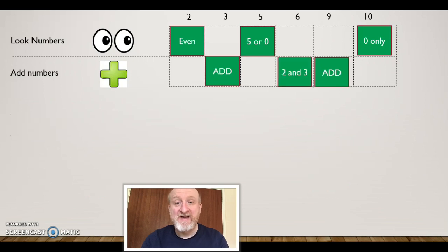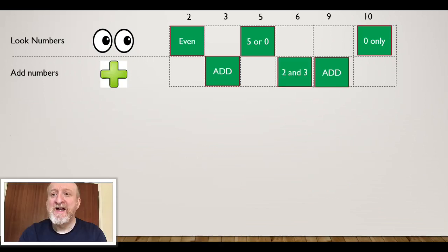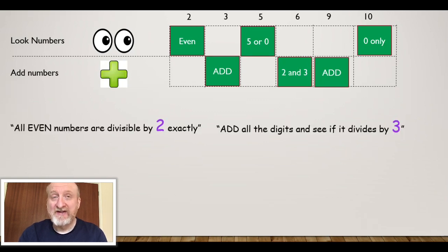Now I'm going to come to the rule for 6, and 6 is really easy. I take the rule for 2, is it an even number, and I take the rule for 3. And if it's divisible by 3 and divisible by 2, then it is divisible by 6. It's as easy as that, there's nothing more to it.